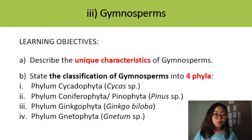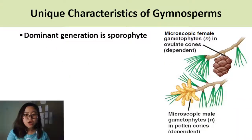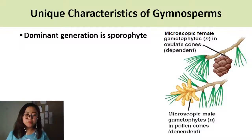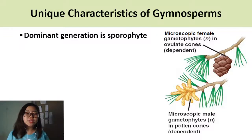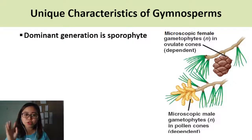So before we go into the lesson, let's have a look at the learning objectives. I hope that by the end of this lesson you will be able to describe the unique characteristics of gymnosperms and also state the classification into four phyla. If you're ready, let's continue. We'll have a look at the unique characteristics of group gymnosperms, and it's easiest to learn about them by imagining the pine tree.